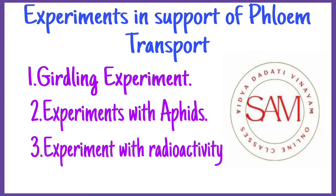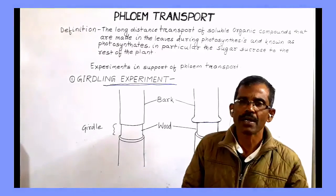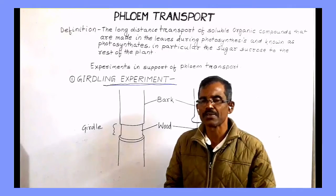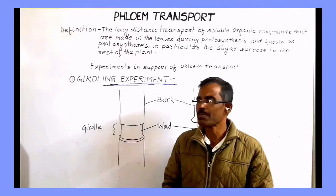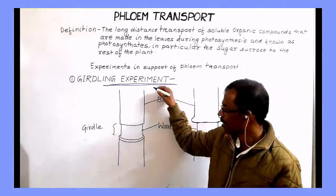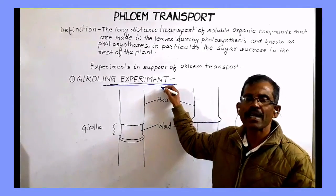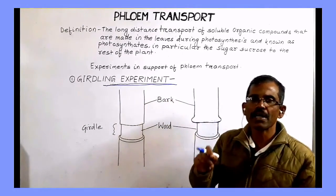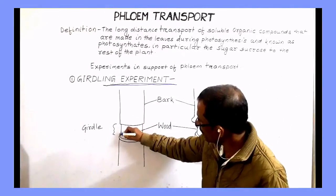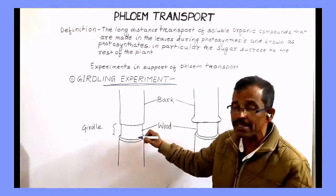Now, we shall discuss about various experiments that provided evidence in support of phloem transport. One of the earliest experiments that provided conclusive evidence in support of phloem transport is the girdling experiment. In this experiment, a ring of the bark containing phloem was removed from the trunk of a tree leaving the wood intact.